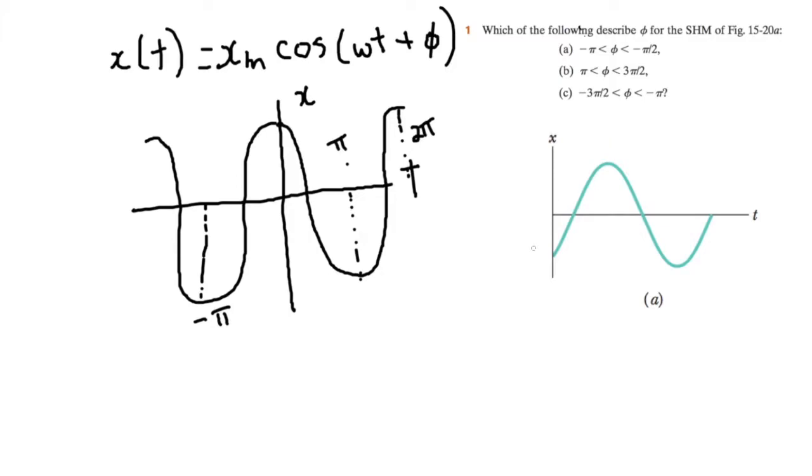So if we look at this original graph here, we can see that at t equals 0, we're not exactly at negative maximum amplitude. It could be, but we're slightly above maximum negative amplitude. So that means that this peak here is between pi over 2 here and pi.